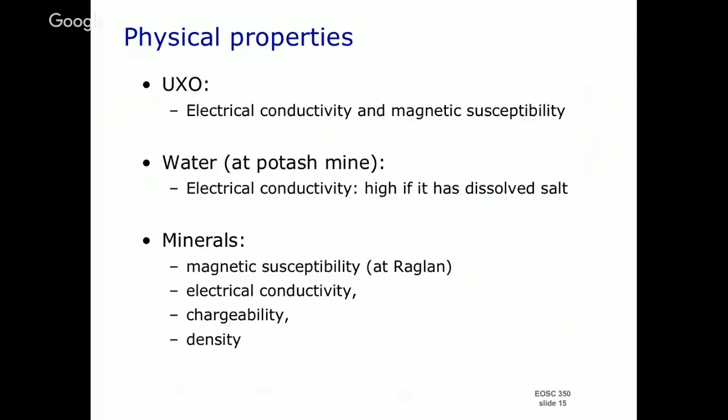Water is an interesting substance. If you take very pure water, it's actually very resistant — it does not conduct electricity very easily. But if you put in a little bit of salts or metals into that water, it can become very conductive. In the potash mine, since you've got potassium chloride, a little dissolved salt suddenly gives you a liquid that's very highly conductive.